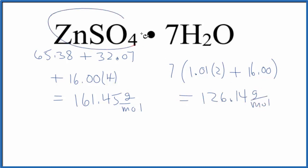So we have the molar mass for the zinc sulfate and then for the seven water molecules. We just add those together, and we get a total molar mass for ZnSO4·7H2O. That's going to be 287.59 grams per mole.